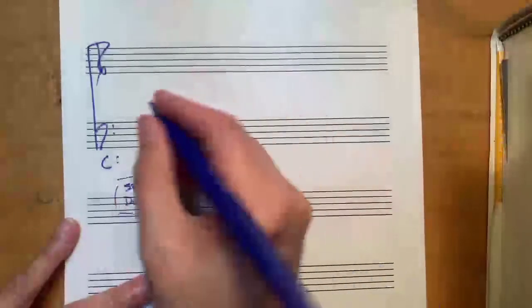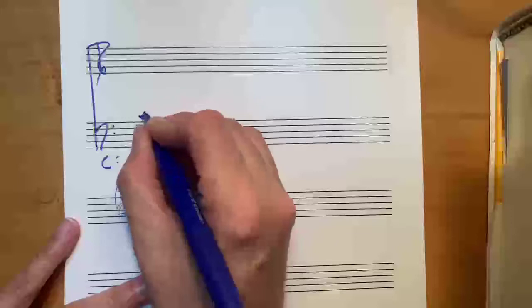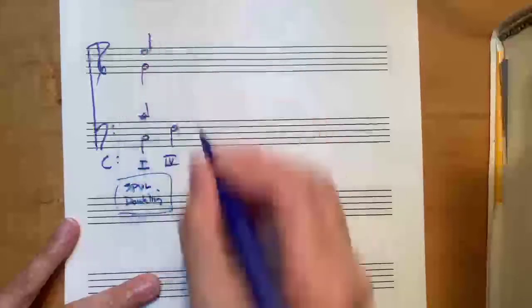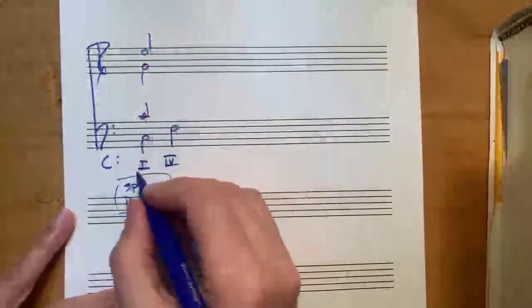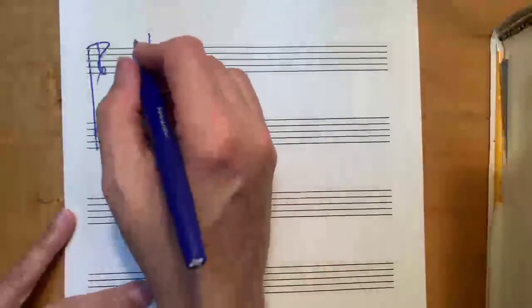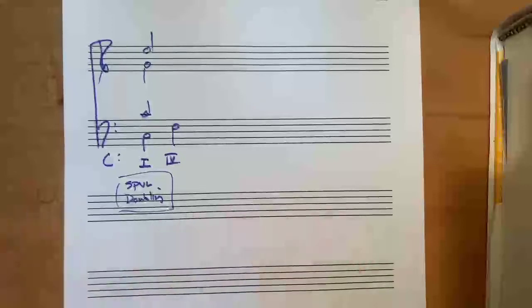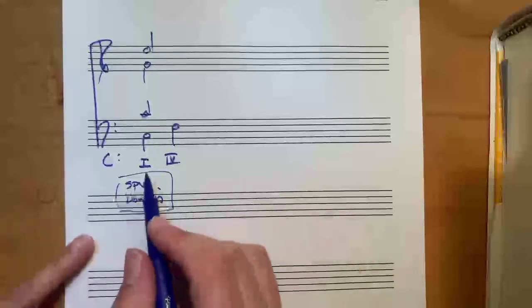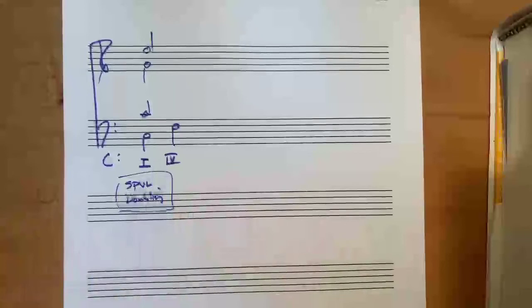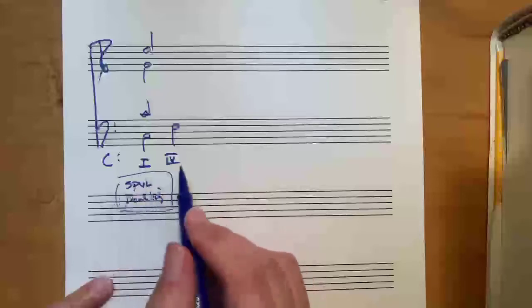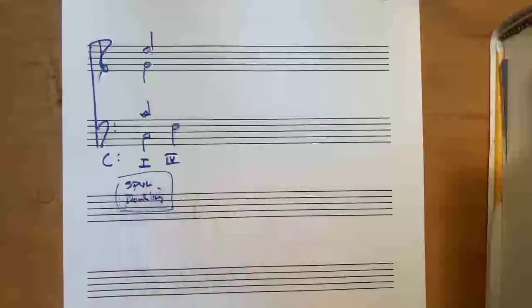I'm going to choose a voicing for my first chord. And now I know that I have two C's, an E and a G. I would like you, before I even do it, to connect as smoothly as you can from 1 to 4. You need two roots, a 3rd and a 5th in the 4 chord. And you need the smoothest possible connection from 1. Stop the video and do that.